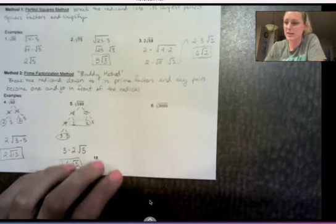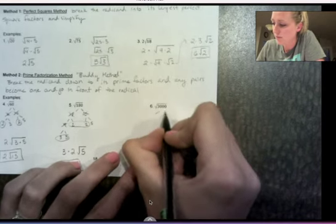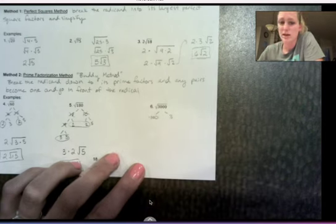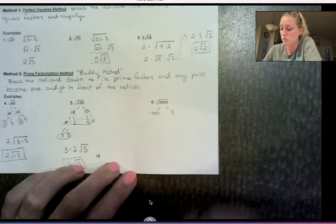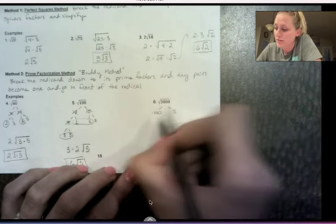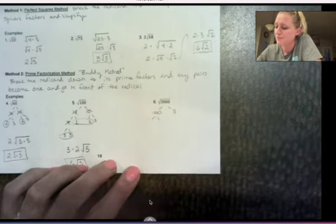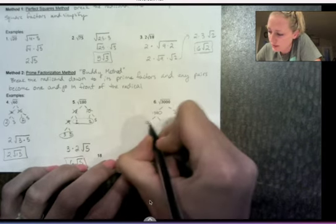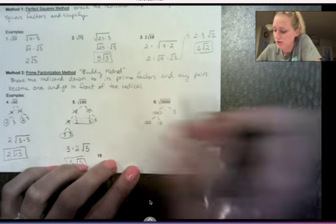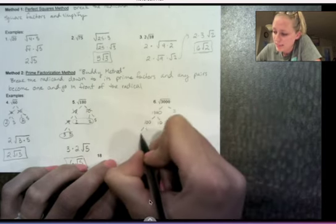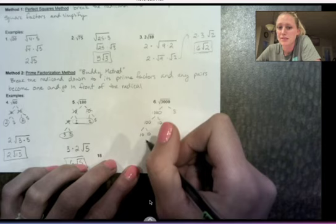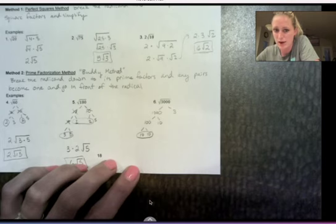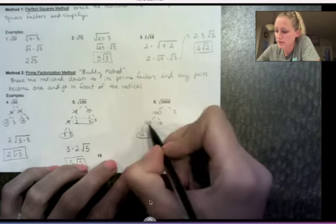All right, 3,000. Okay, so the one that comes to my mind is 1,000 times 3. Okay, and again, you can use any ones that you want. That's just the ones that I'm thinking of. So 1,000, let's see. I could do 10 times 100. So I'm going to do 100. 10, 3, I can't break down anymore. 100, I could break into 10 and 10. Now, 10 and 10, I could break down further, but I'm actually not going to because it's a pair right now. So I'm not going to break that down any further. Okay?